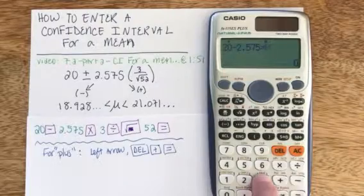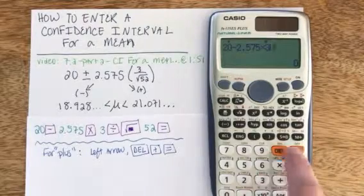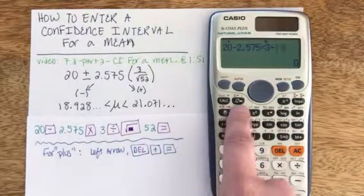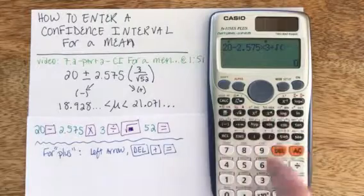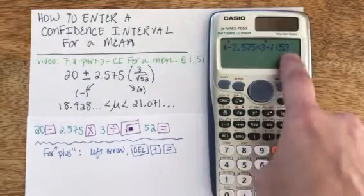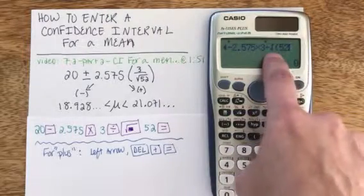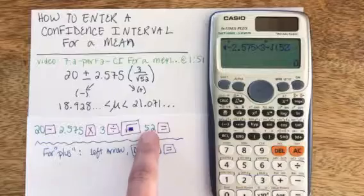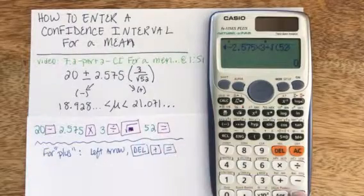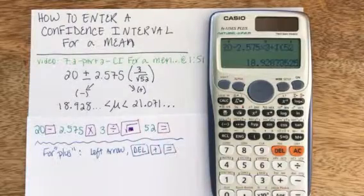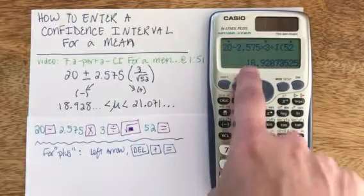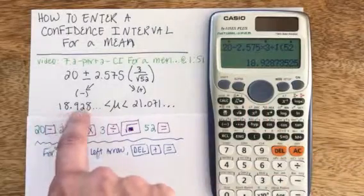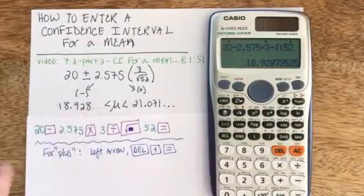So times 3, divided by — don't forget your calculator has a square root button right there — and I can hit 52, even though it's inside a square root with a parenthesis. I don't need an end parenthesis; I can go ahead and just hit the equal button, and I get the lower bound of 18.92.